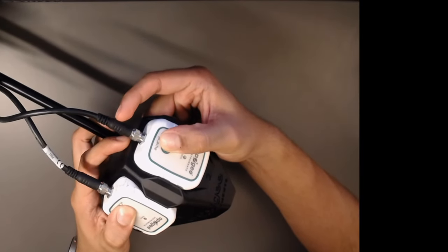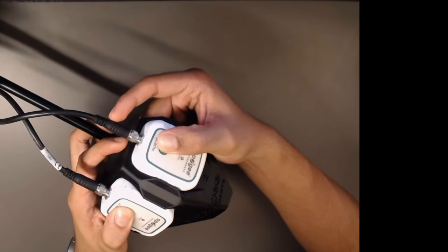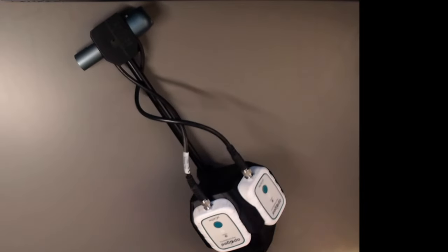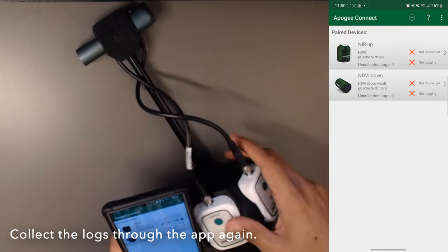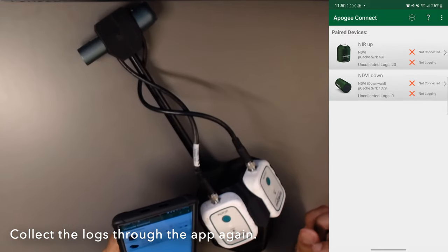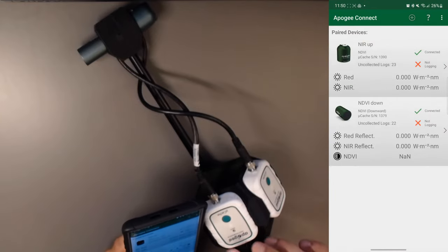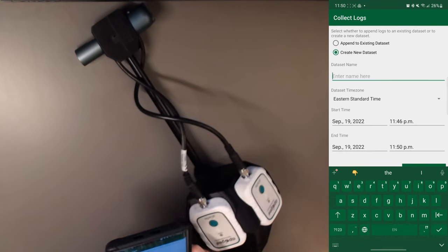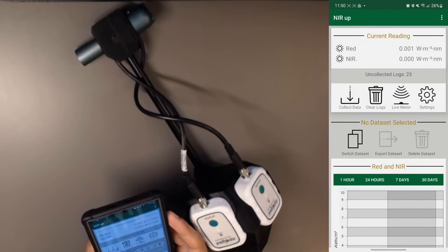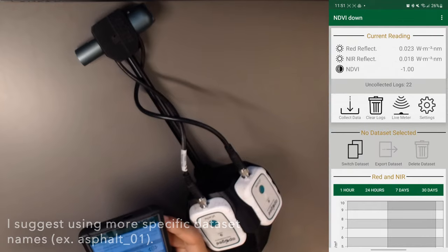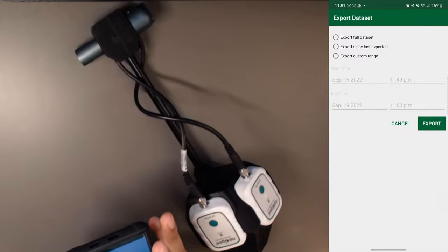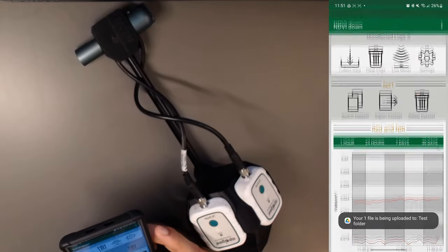Once you are done surveying the patch of area that you want to measure the NDVI over, you can press the button on the two data loggers simultaneously for 10 seconds to stop the data logging. Here we go. Thank you.